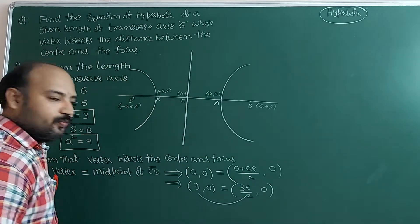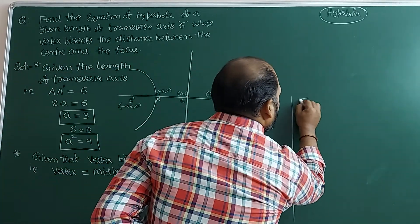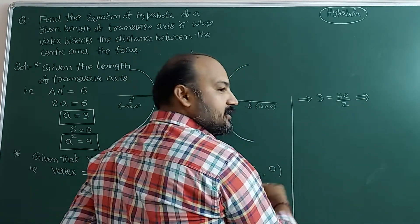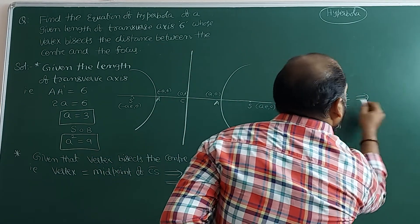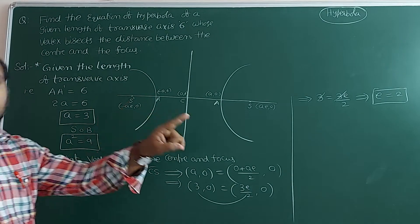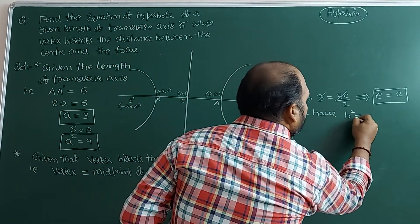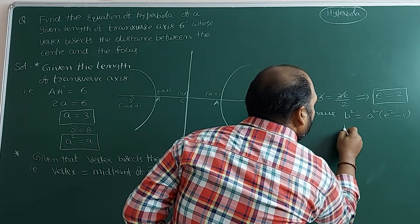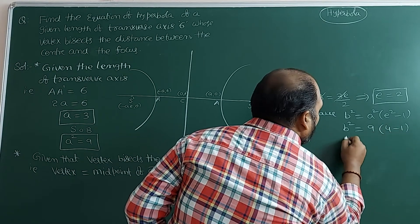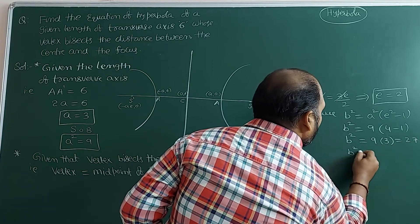Equating the two, comparing like components on both sides, you will get 3 = 3e/2. The 3s get cancelled, giving e = 2. After getting the values of a and e, we have b² = a²(e² - 1). So b² = 9 × (2² - 1) = 9 × 3 = 27. So b² = 27.